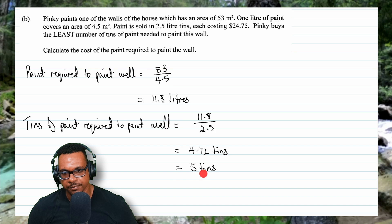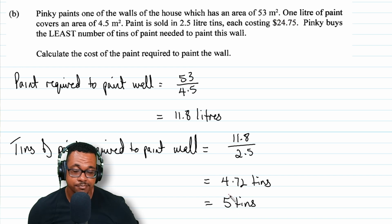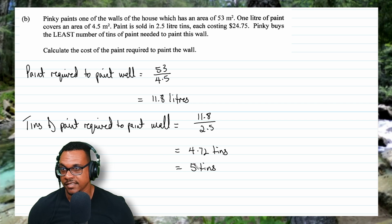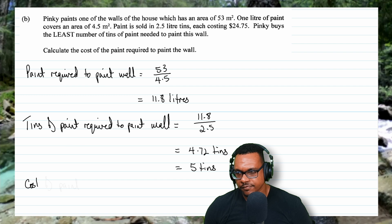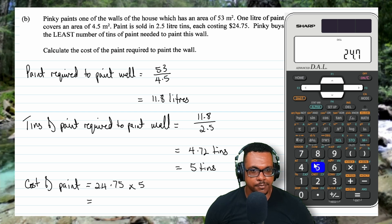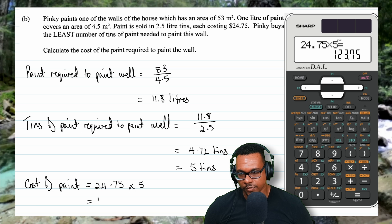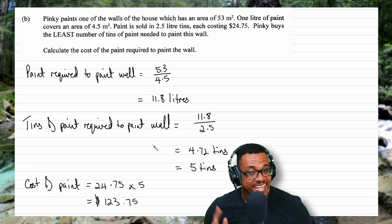Each tin of paint costs $24.75, and we need 5 tins. So the cost of the paint is $24.75 multiplied by 5, which equals $123.75. This brings us to the end of question 1.